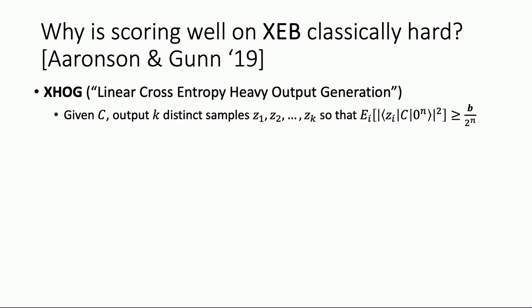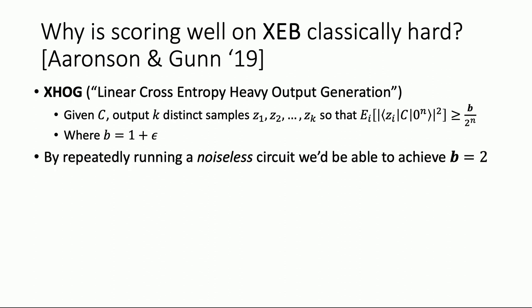XHOG gets to that property directly, conjecturing that given a random quantum circuit, outputting K samples Z1 through ZK from the output distribution such that the arithmetic mean of the output probabilities is sufficiently high — specifically B over two to the N — where B is ideally 1 plus epsilon, as large as possible. An ideal noiseless experiment would achieve B equals 2, epsilon equals 1, which follows from Porter-Thomas. But noise can cause considerably different values for B. If you're scaling the experiment without correcting noise, you'd expect something exponential — like two to the minus D.